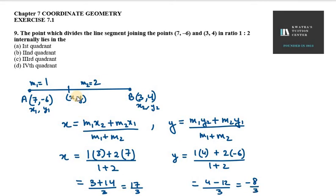So the x and y values are 17 over 3 and -8 over 3. This is the point that divides the line segment internally, and I'll call it point P.